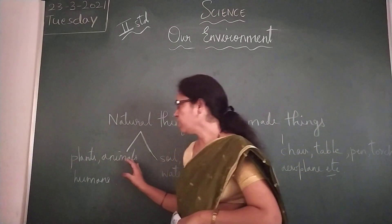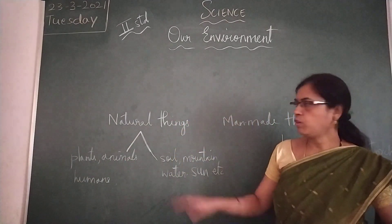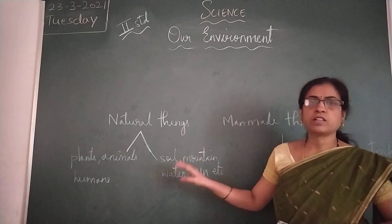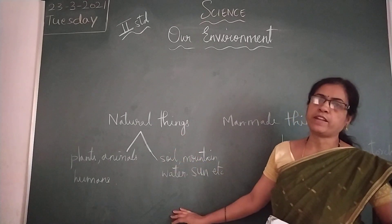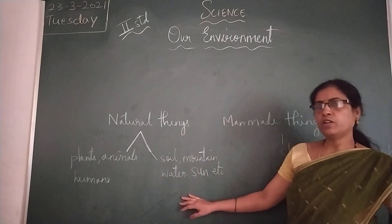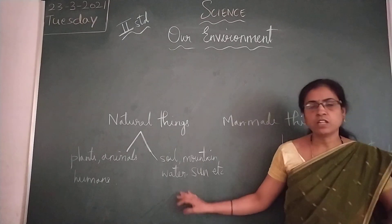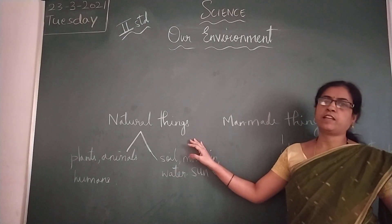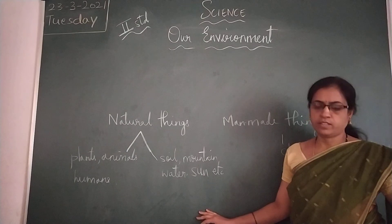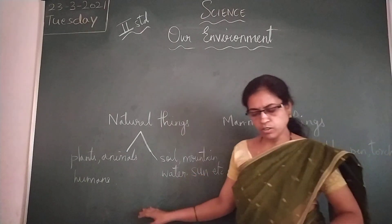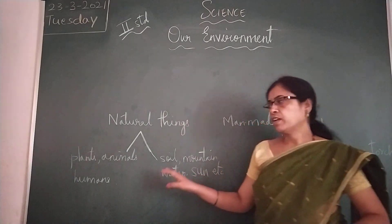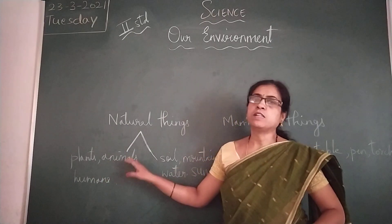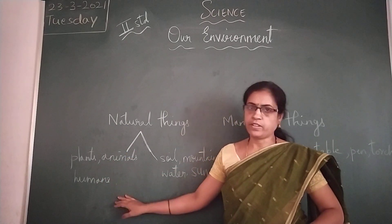So children, what are natural things? The things that are given to us by nature are called natural things. They can be living or non-living. Living things include plants, animals, birds, and humans.